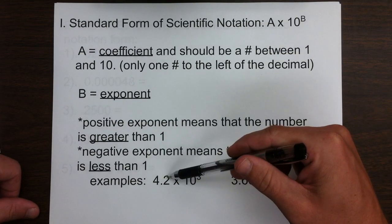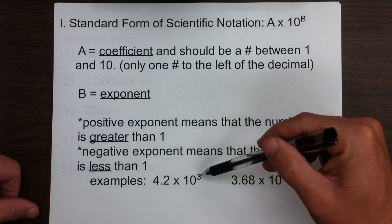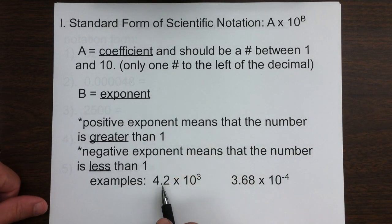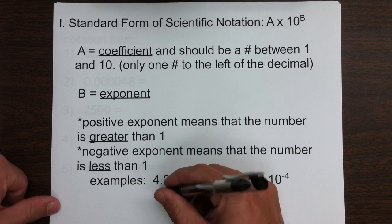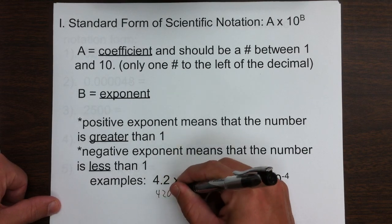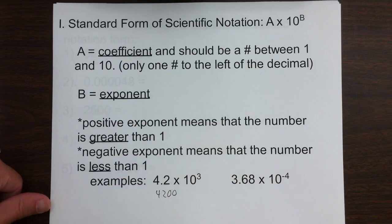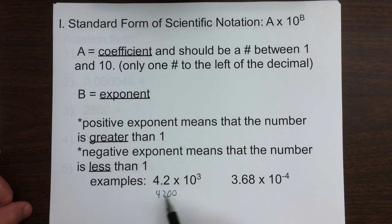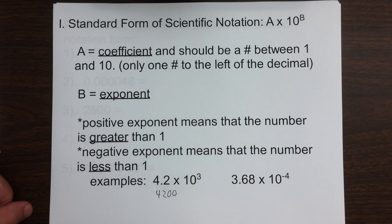So if we were to write out 4.2 times 10 to the third, this means we're going to move the decimal three places, and that would give us 4,200. Notice we move the decimal place to the right three places, so we have to put in these extra zero placeholders, and this number is bigger than 1 because there is a positive exponent.